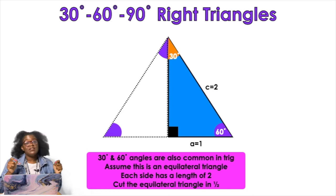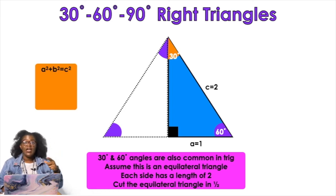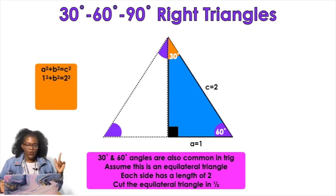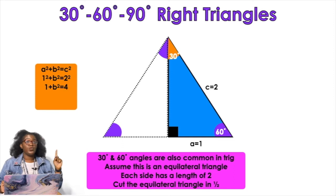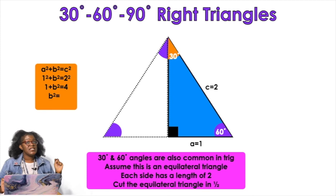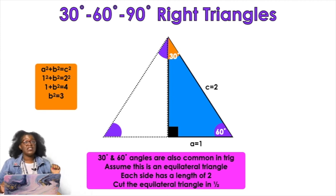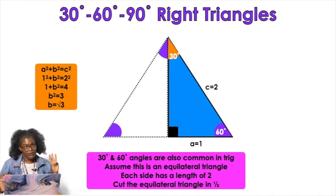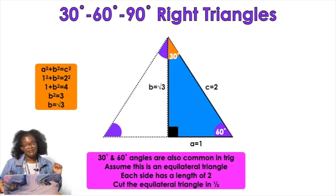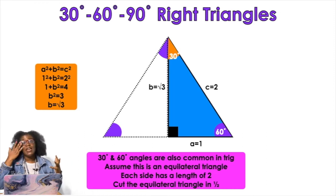Now I have the hypotenuse of 2 and a leg of 1, and I need to find the other leg using the Pythagorean theorem: 1 squared plus b squared equals 2 squared. That gives us 1 plus b squared equals 4. Subtracting 1 from both sides: b squared equals 3. Taking the square root, b equals the square root of 3. That's where 30-60-90 triangles come from and how we get those common trig ratio values.